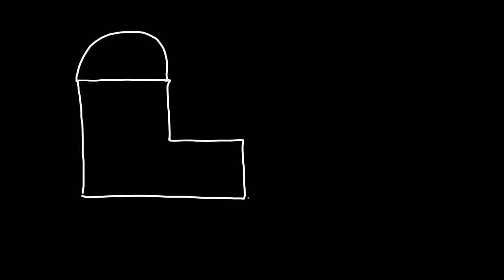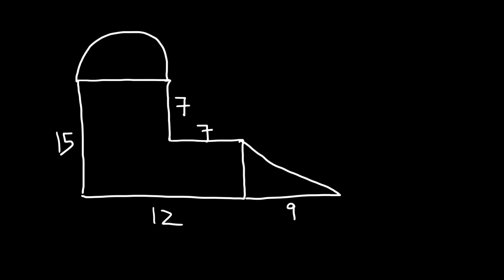Now let's move on to our next example. Let's put a semicircle on top and a triangle on the bottom. We're going to say these two sides are 7, and we also have 15, 12, and 9. Go ahead, pause the video, and find the area and the perimeter of this figure.